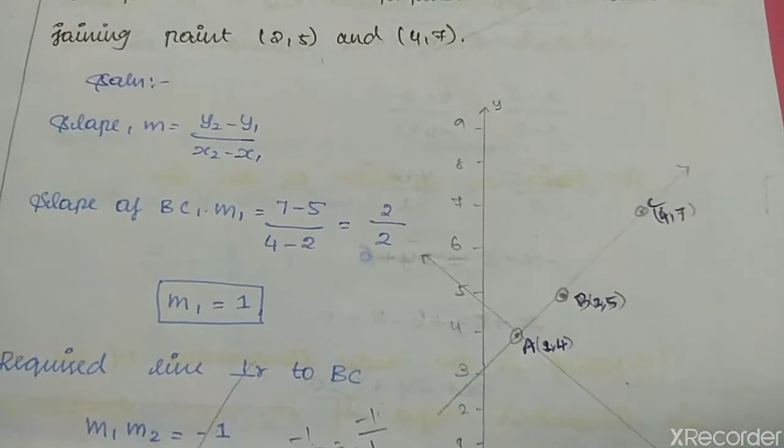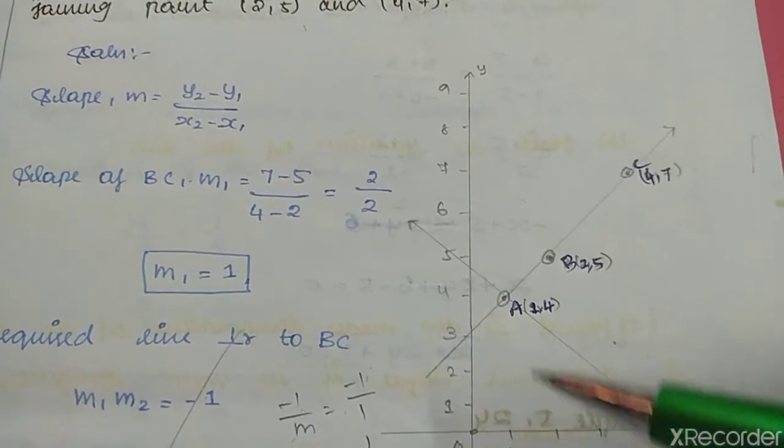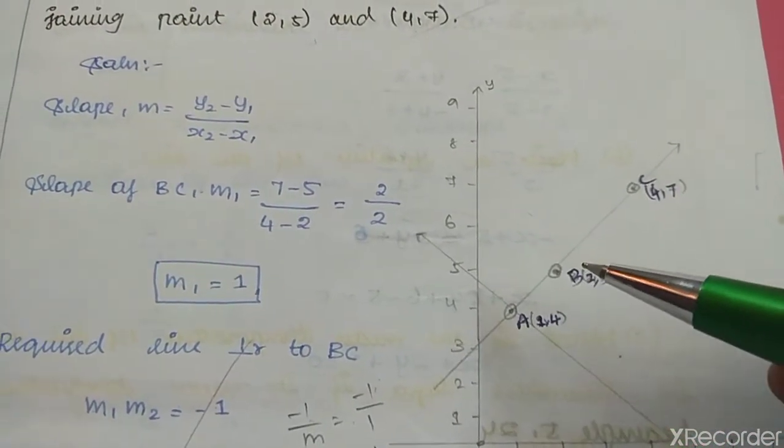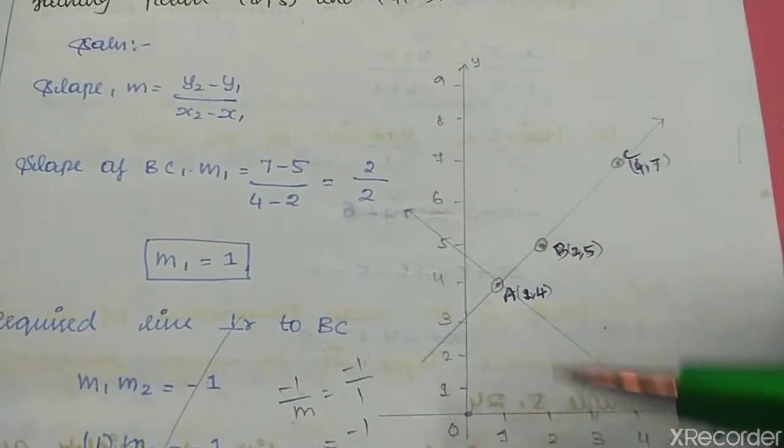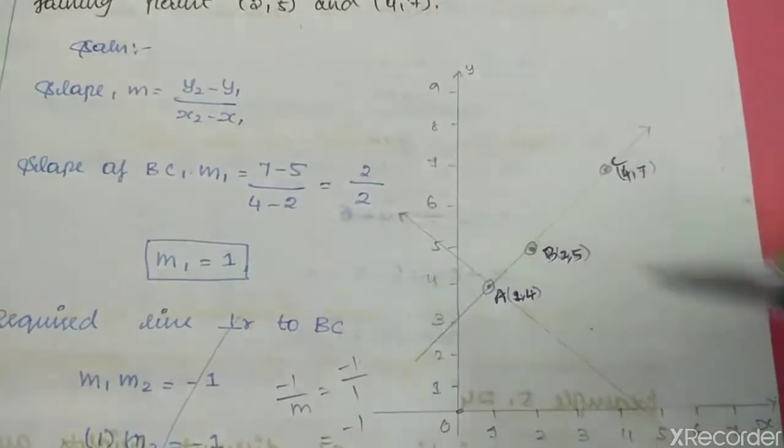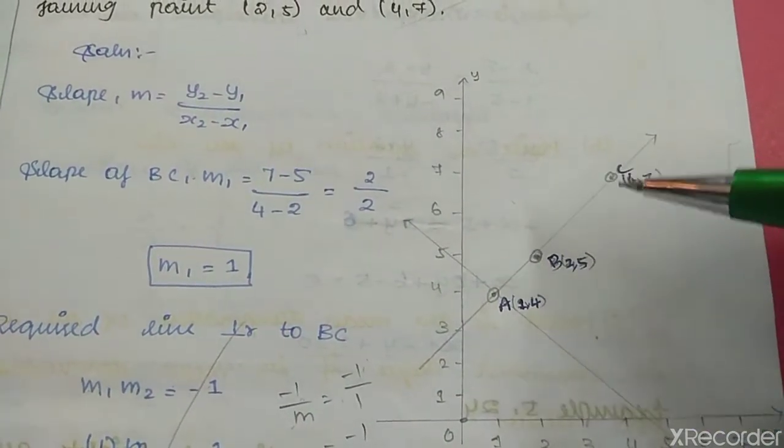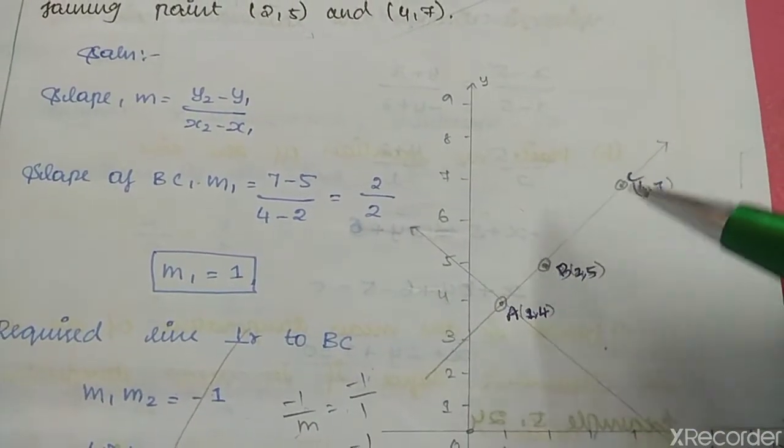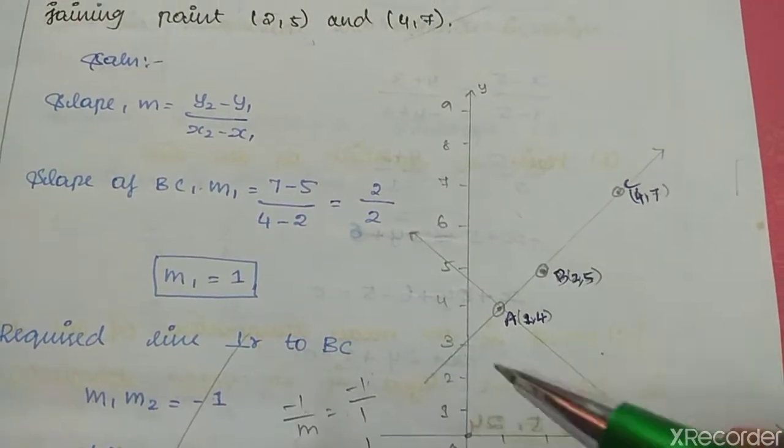The x value is 2 and y value is 5, so we have B(2,5). For the other point, x value is 4 and y value is 7, so C(4,7). We need to draw the straight line through these points.